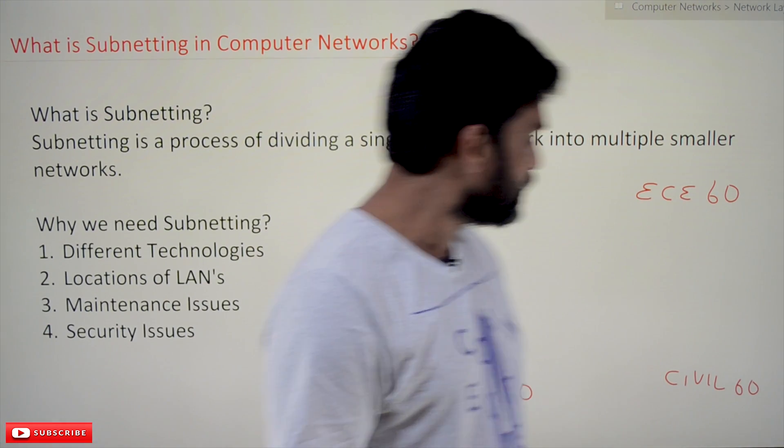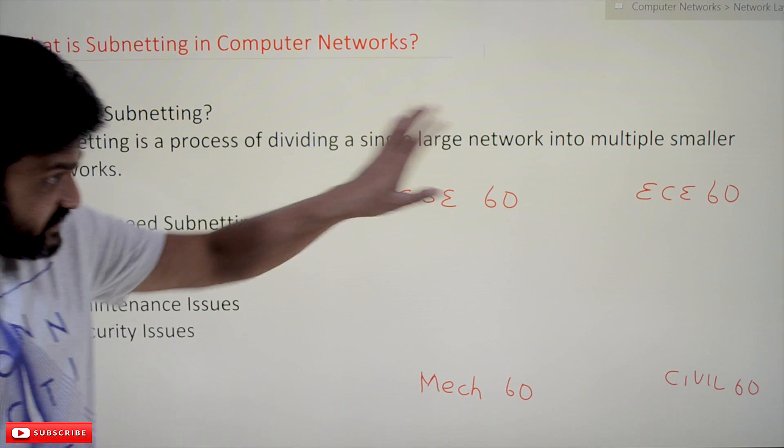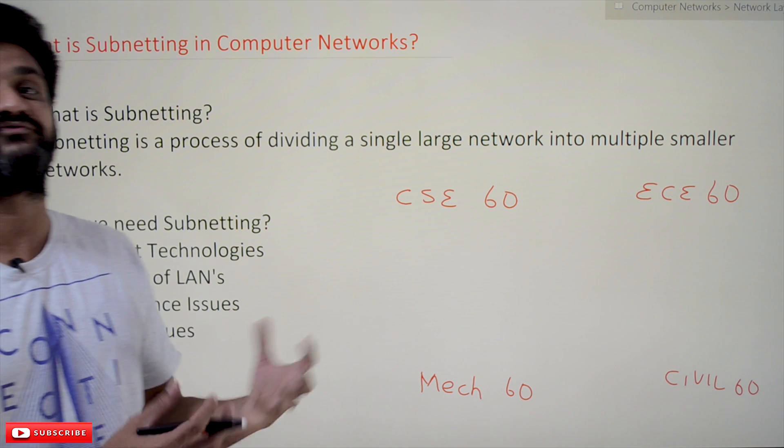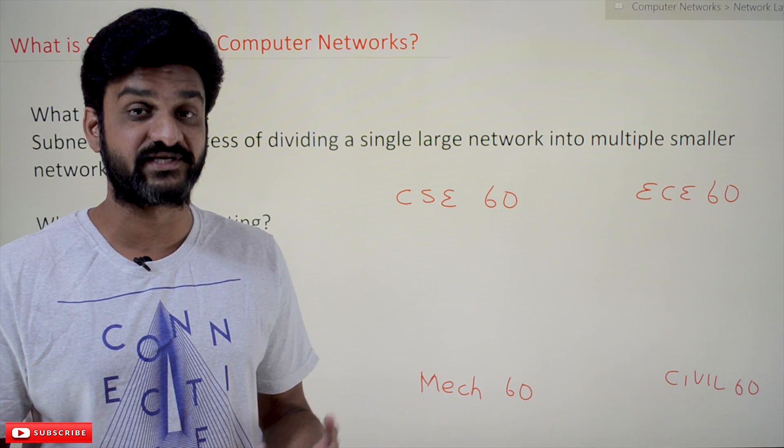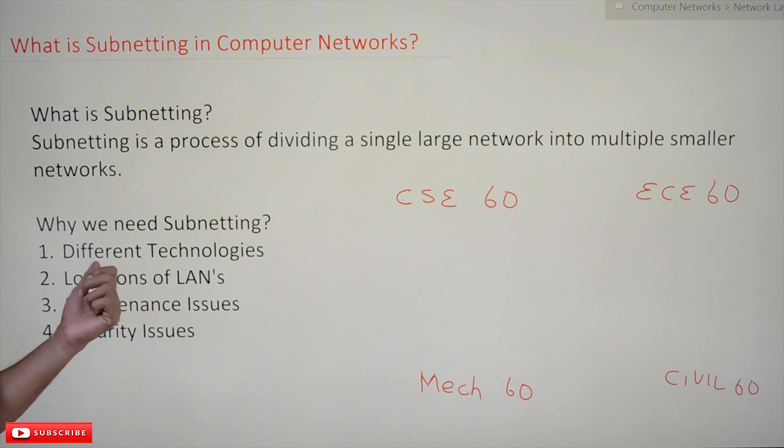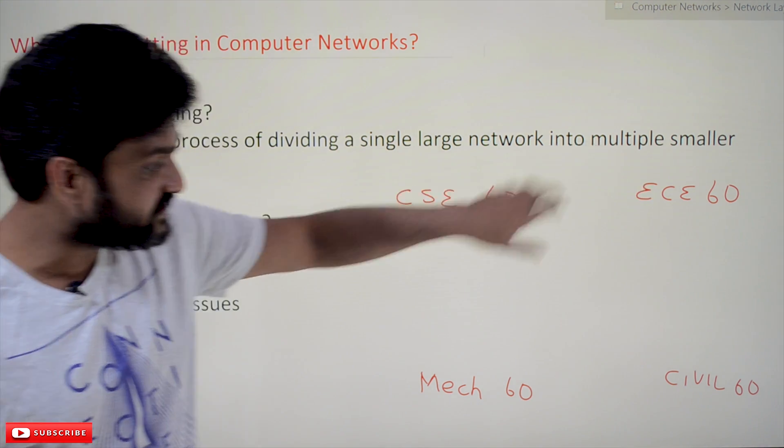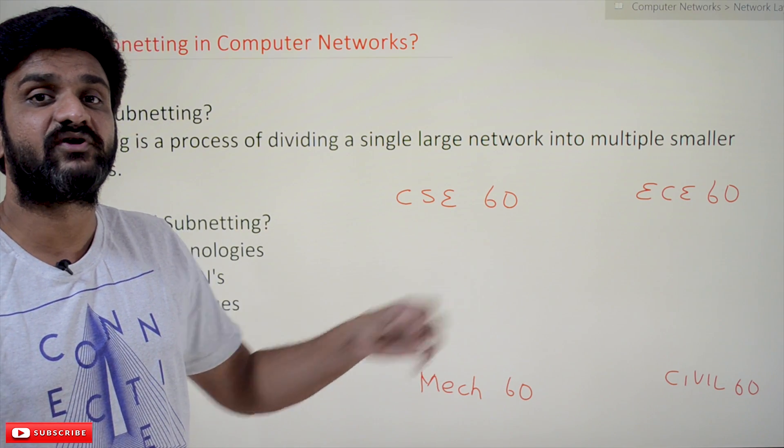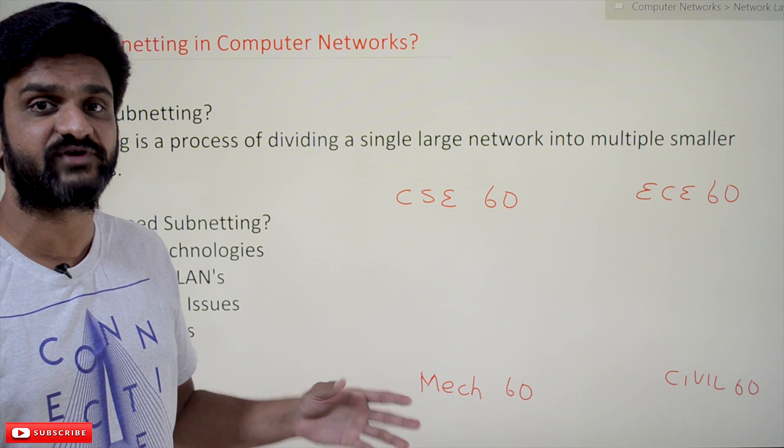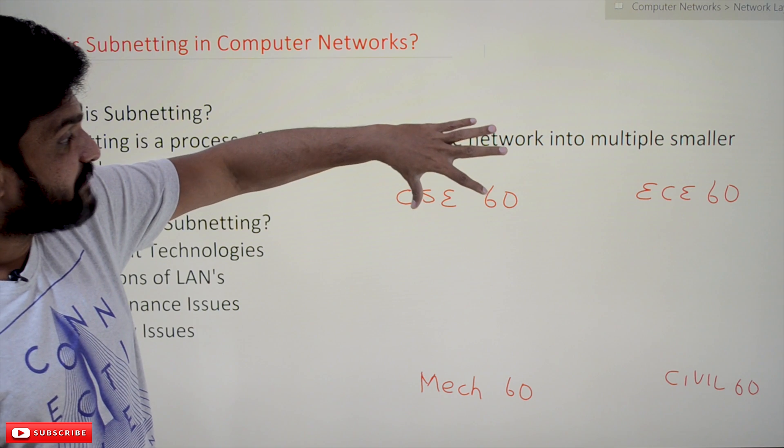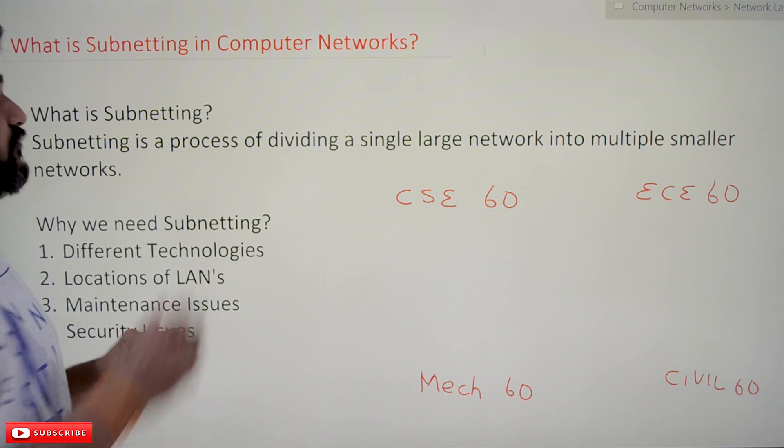One of the reasons we need subnetting is different technologies. These 60, 60, 60 systems are around 256 systems total. So to establish a network of 256 systems, one single network is sufficient. But what happens here is, for example, if you take CSE department, the equipment in the lab wants to establish their network in an Ethernet network.